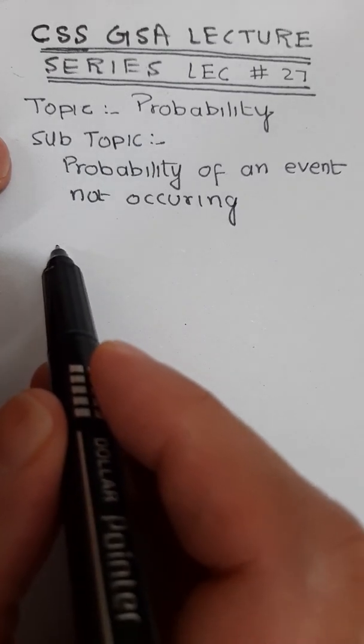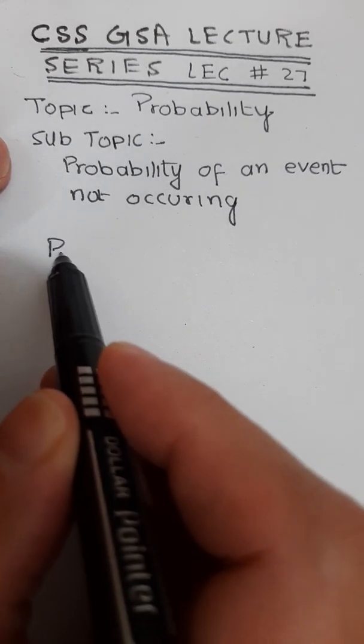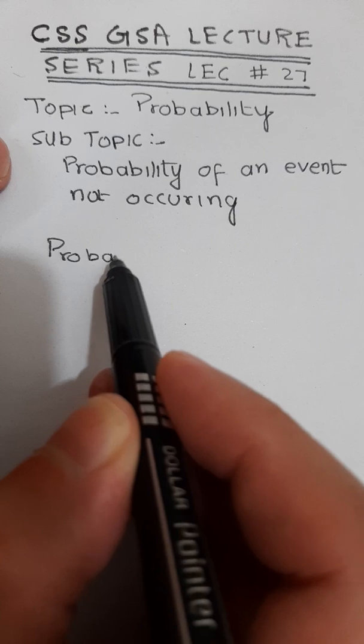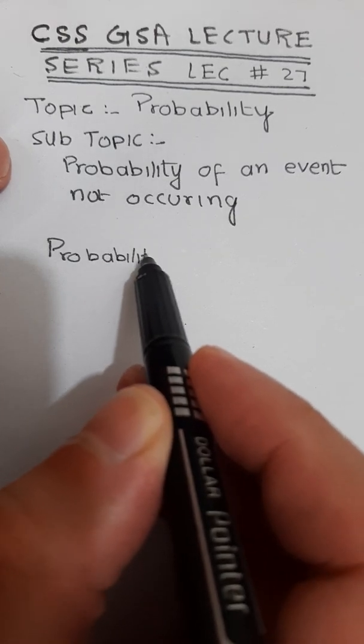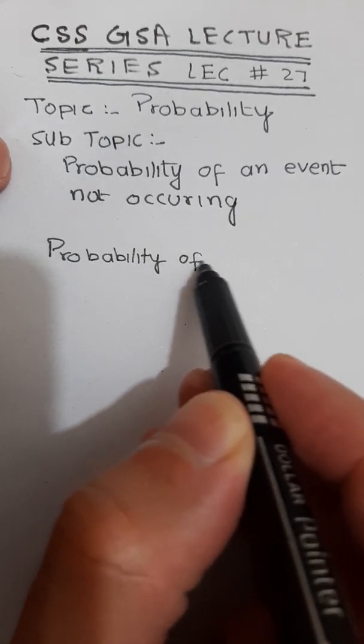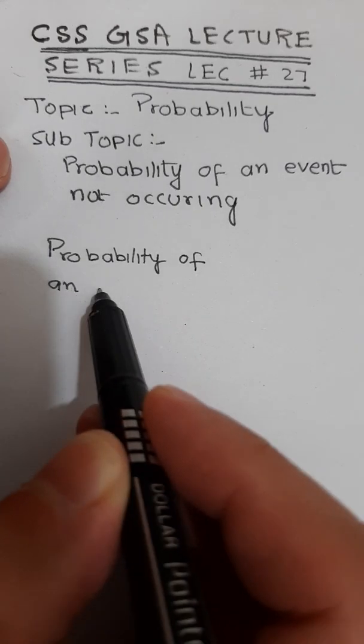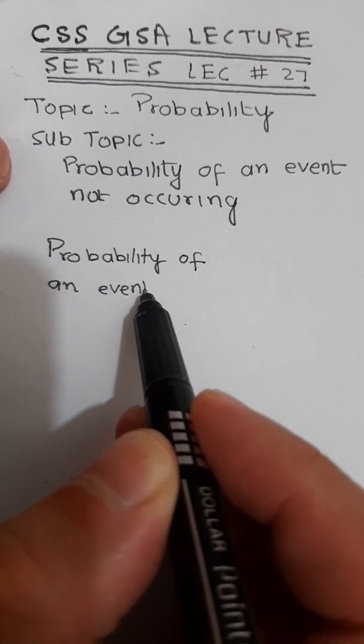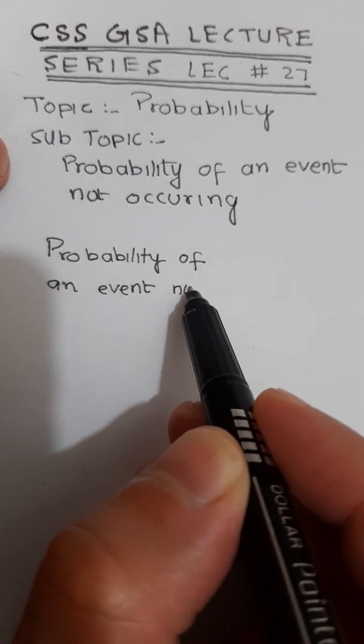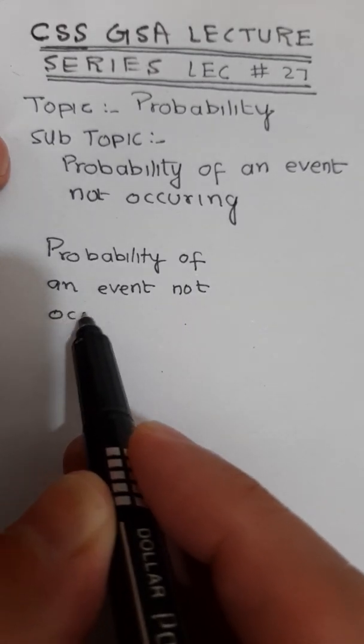First of all, write down the formula for this. So probability of an event not occurring...